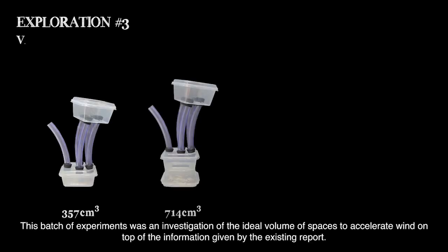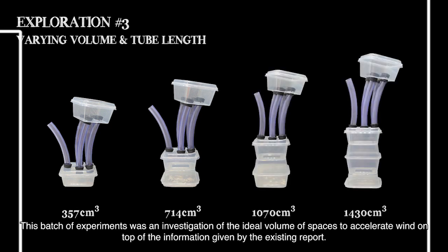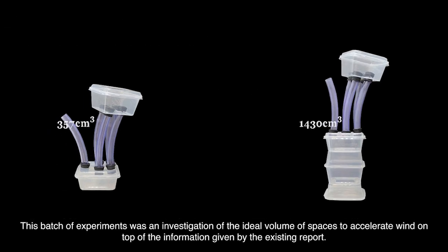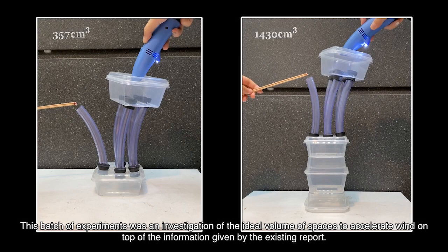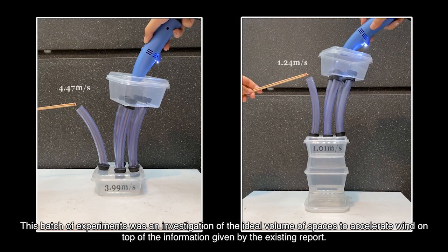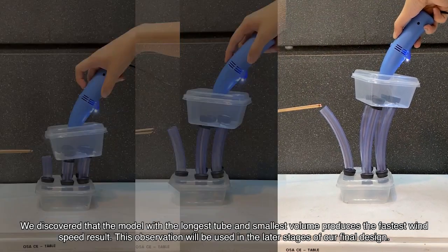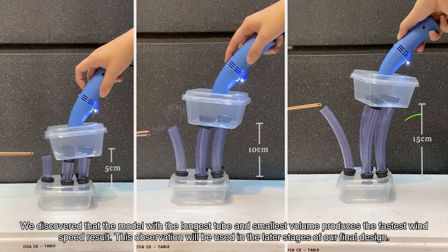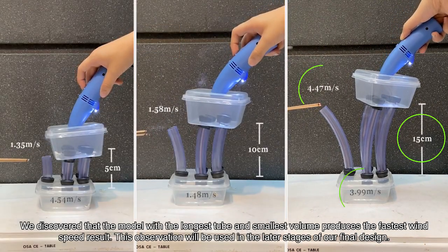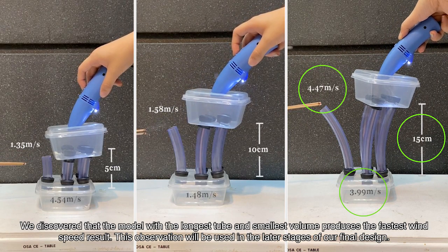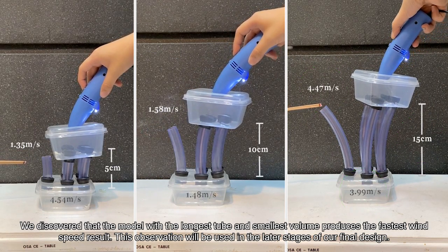This batch of experiments were an investigation of the ideal volume of spacers to accelerate wind on top of the information given by the existing report. We discovered that the model with the longest tube and smallest volume produces the fastest wind speed result. This observation will be used in the later stages of our final design.